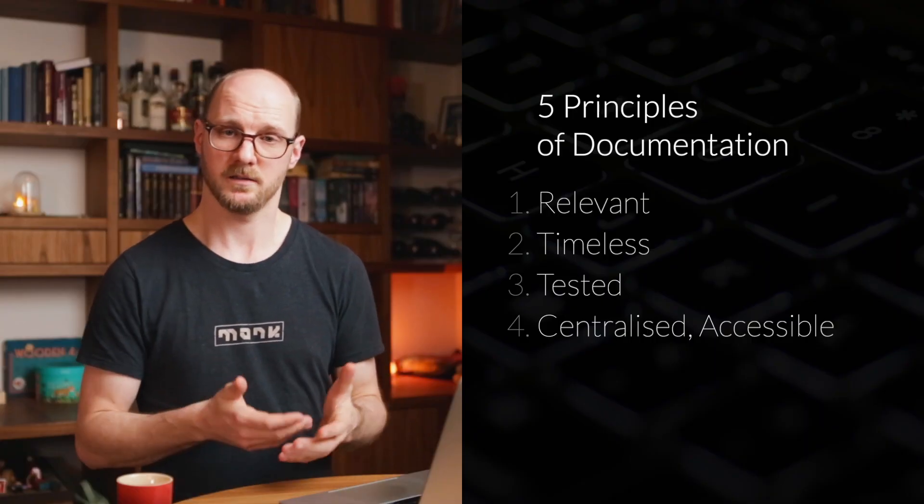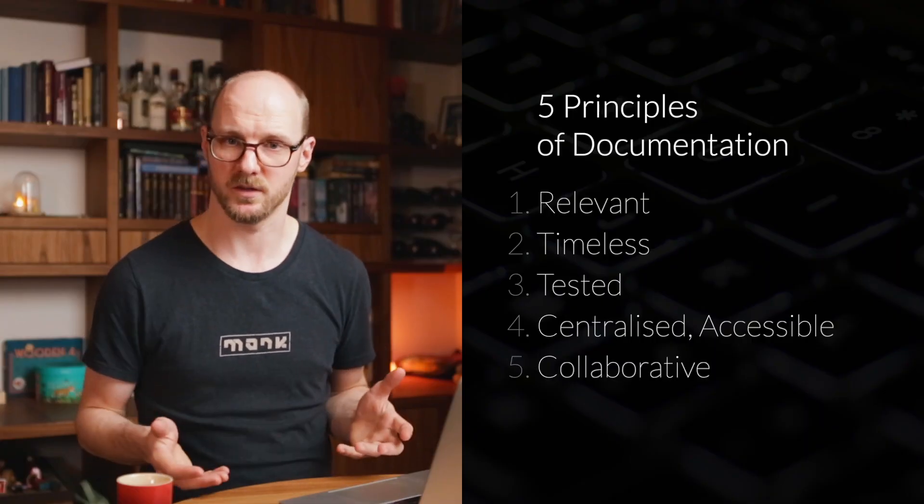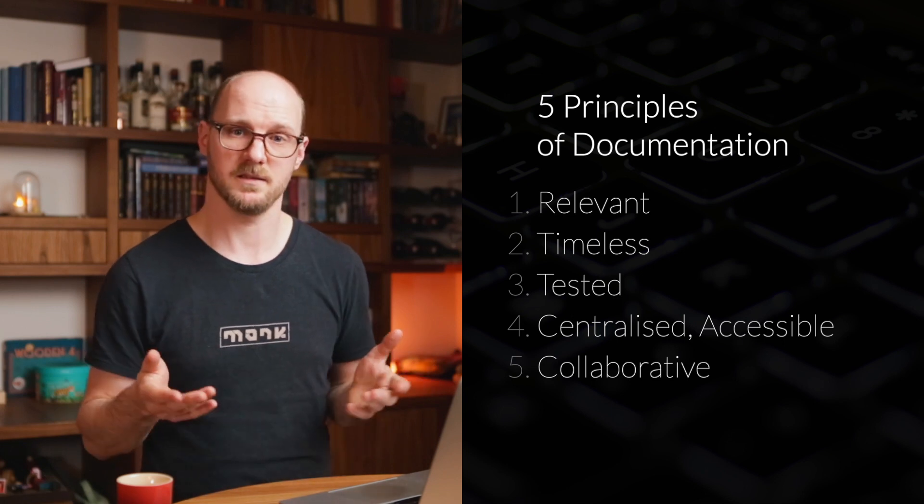The fifth principle is that good documentation should be collaborative. You should not own it alone — do this as a team. That means all updates to documentation should be code reviewed. It will increase the quality. It also means everybody should be able to edit the documentation. The less friction there is for updating it, the better. If all developers are working in Git, why not make it a Git repository? It's just a commit and push, then a merge request. Or if it's a wiki with an edit button — less friction means it's more up-to-date because people are more likely to actually do it.